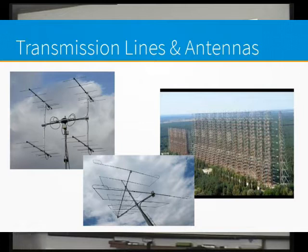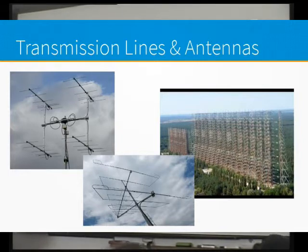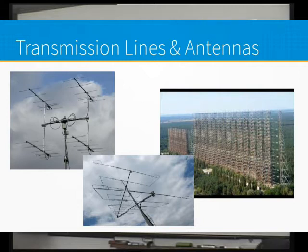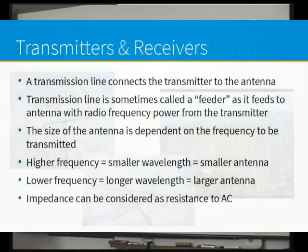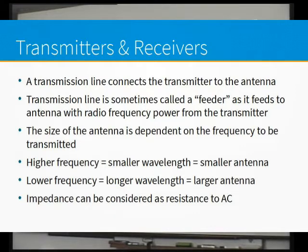We're going again. Transmission lines and antennas - this is the exciting bit. This is how we get the RF energy from our transmitter across to somebody else. A transmission line is the bit between the transmitter and the antenna, sometimes called a feeder, so it feeds radio frequency from the transmitter to the antenna.